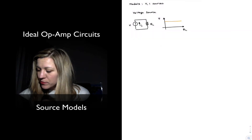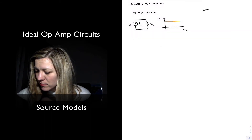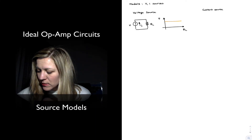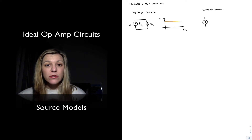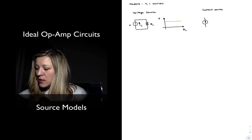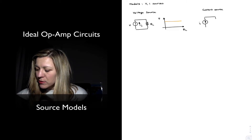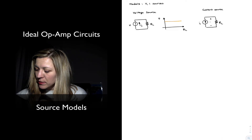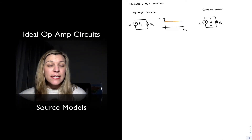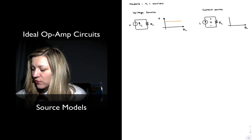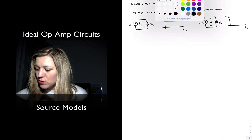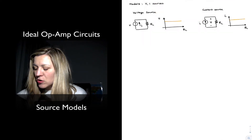Likewise, for a current source, the ideal model is that of an element able to maintain the current through its terminals constant, irrespective of loading conditions. The voltage across the element will change as needed with a varying load in order to keep the current constant. If you were to graphically represent that, you would have that for varying loading conditions, the current remains constant.